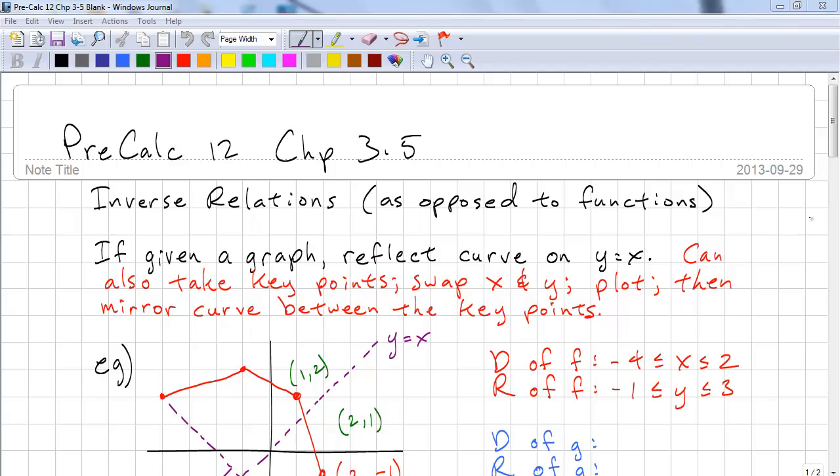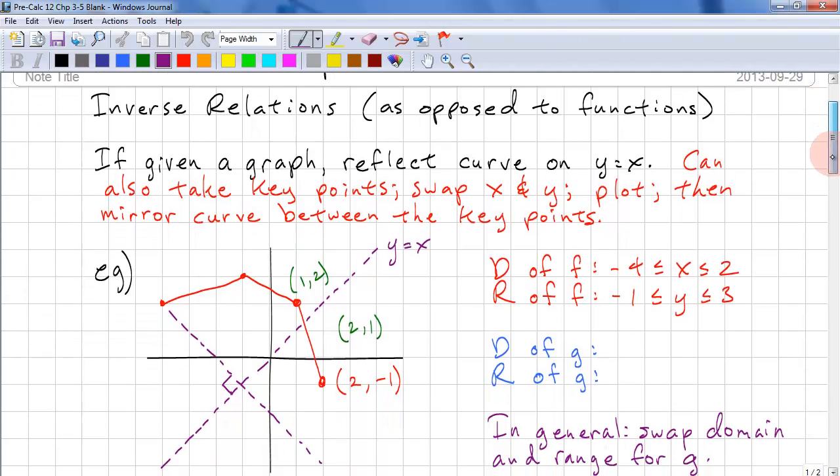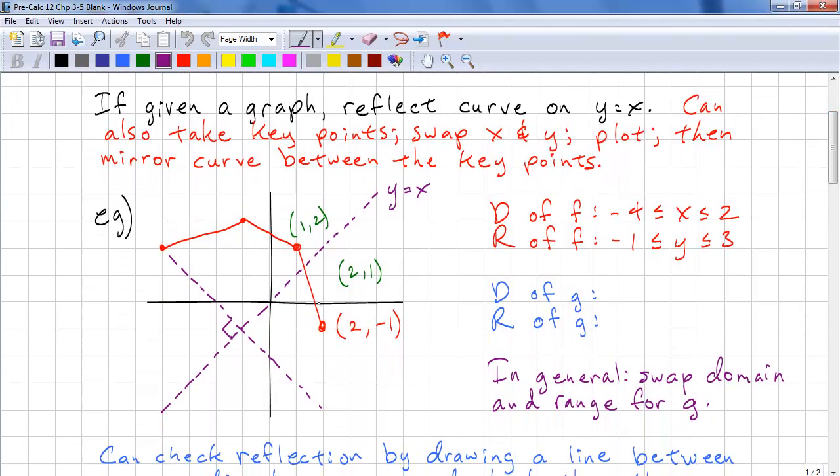So let's look at an example. We have this curve. And we take key points and reflect it on the y is equal to x axis. So this point is 1, 2, 3 away.